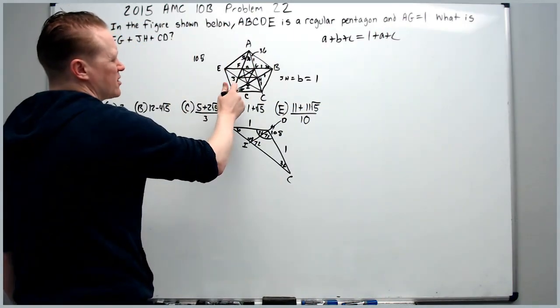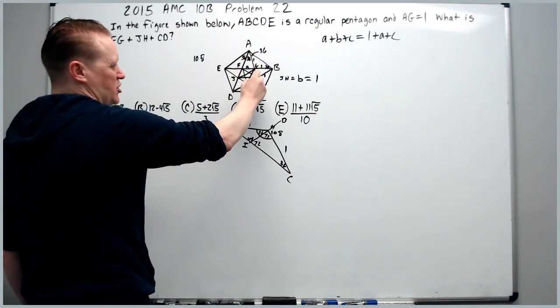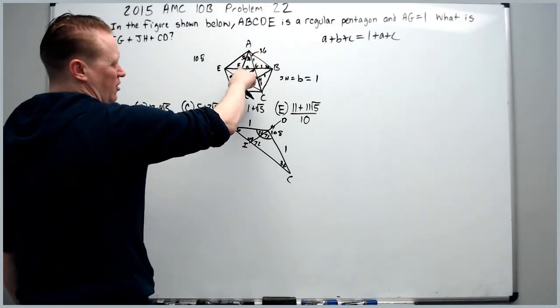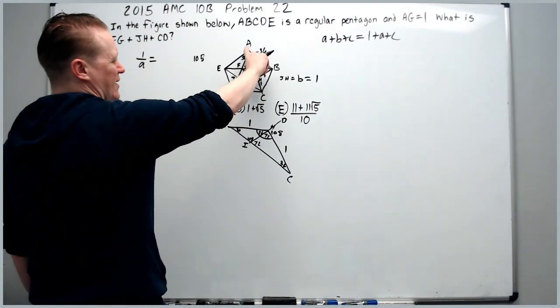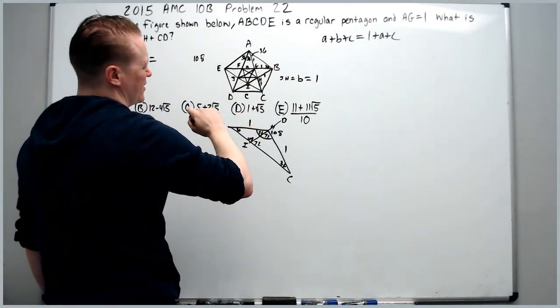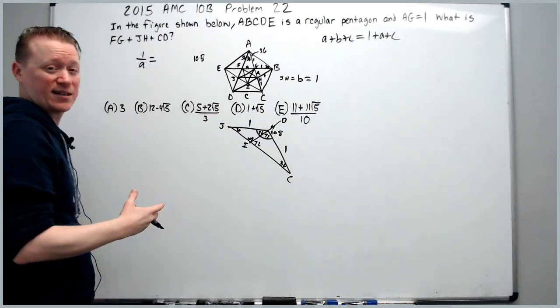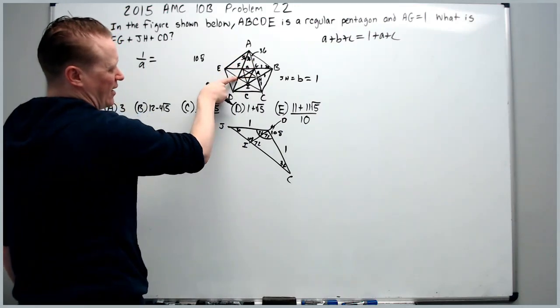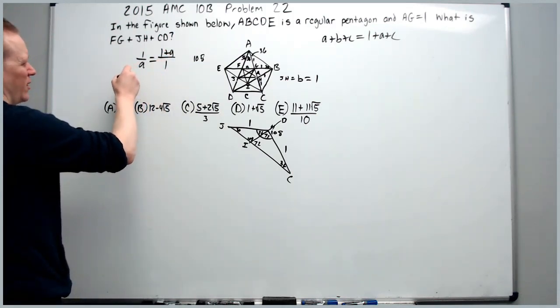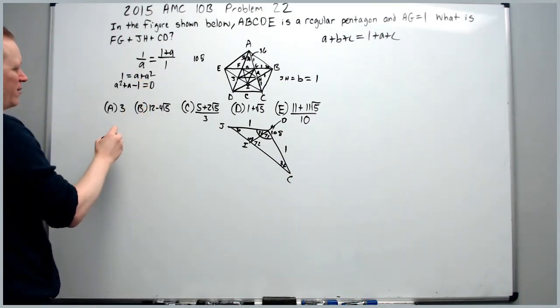Next up, we can probably solve for A because we know that this JH right here is one. We're going to use similar triangles. This triangle here, this length FG, JH and CD or DC are all parallel. And because they're parallel with the same angle A up here, I can do AG over FG is one over A and that has to equal one plus GH over JH. We can also call this length here, it's A also, right? Because this is a regular pentagon in the middle as well. So we've got one plus A over JH and JH we already said is one. So now we're just going to cross multiply to solve this. You're going to get one equals A plus A squared. You'll move the one over and now you can do quadratic formula to get negative B is negative one.